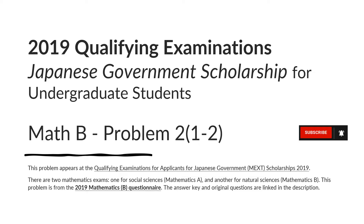There are two mathematics exams: one for Social Sciences Mathematics A and another for Natural Sciences Mathematics B. This problem is from the 2019 Mathematics B exam. The answer key and the original questions are linked in the description.